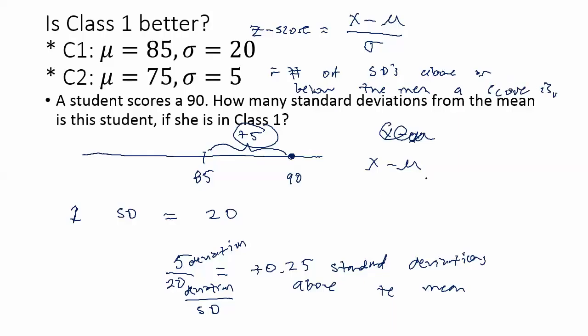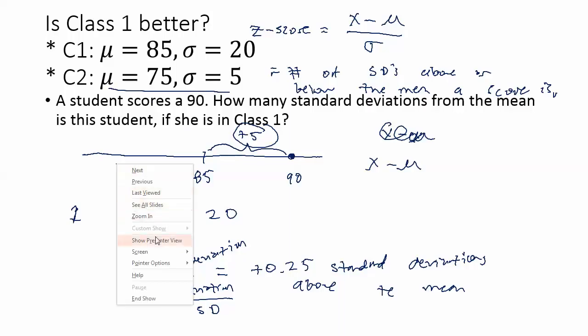Okay, so in a similar fashion, if this student had been in class 2 with a mean of 75 and a standard deviation of 5, we could, in a very similar way, deal with that as well. With mu equals 75 and sigma equals 5, we could say, okay, well, this person scored a 90.